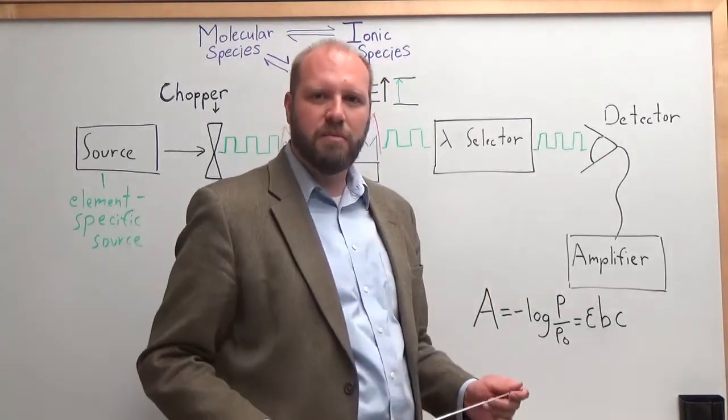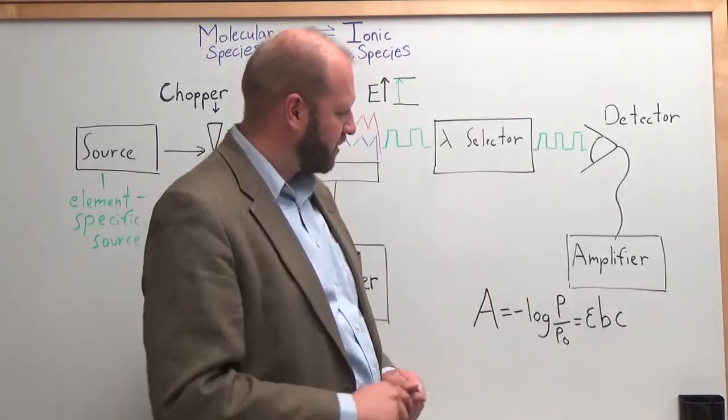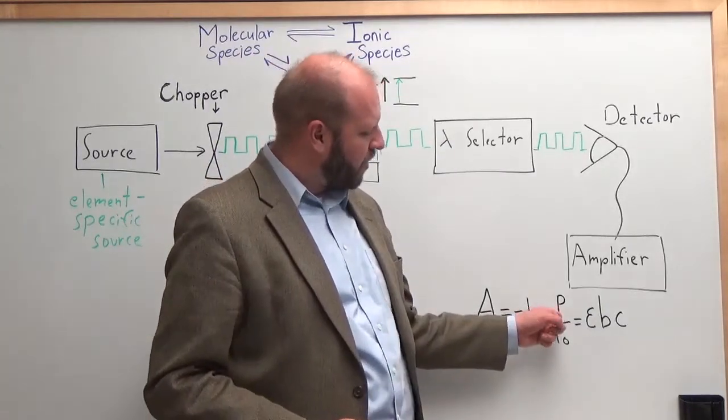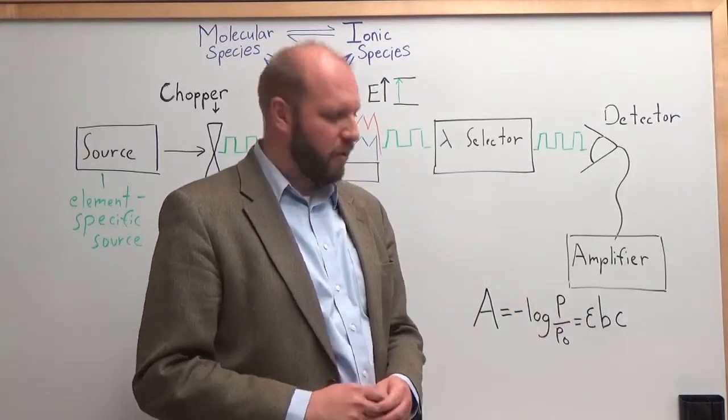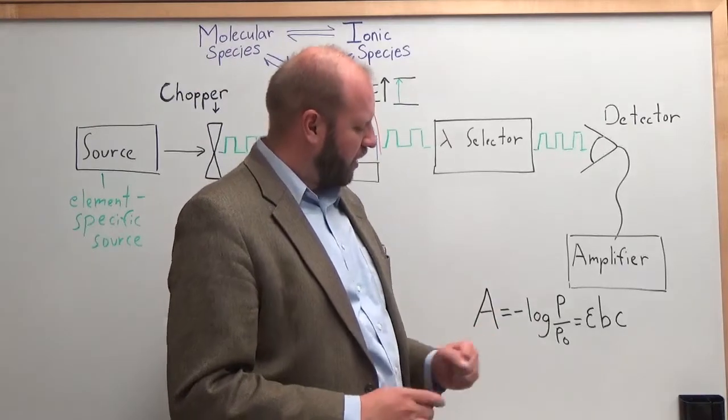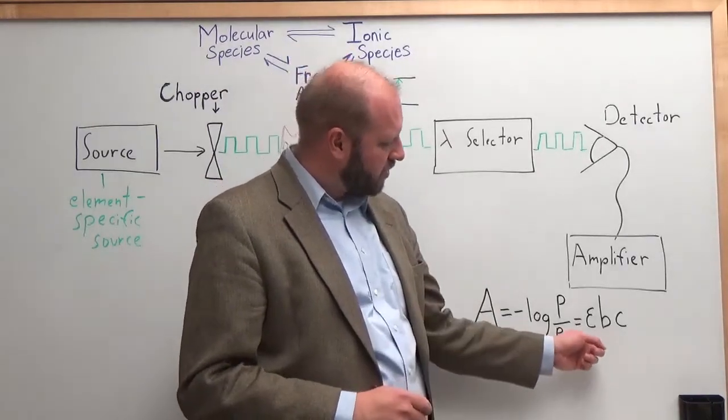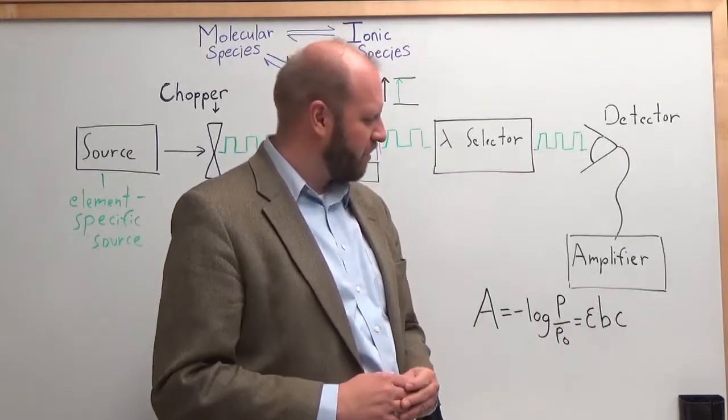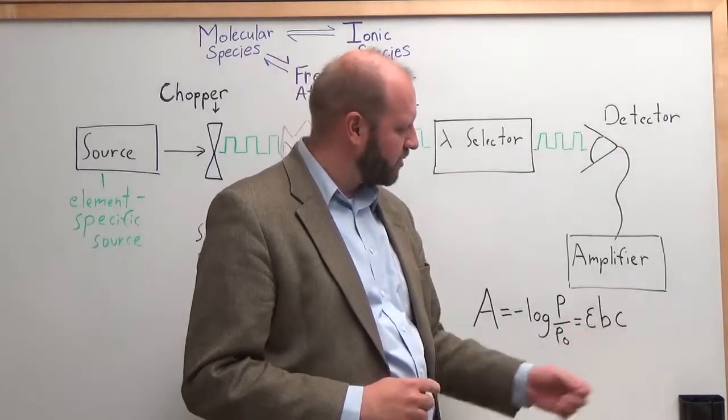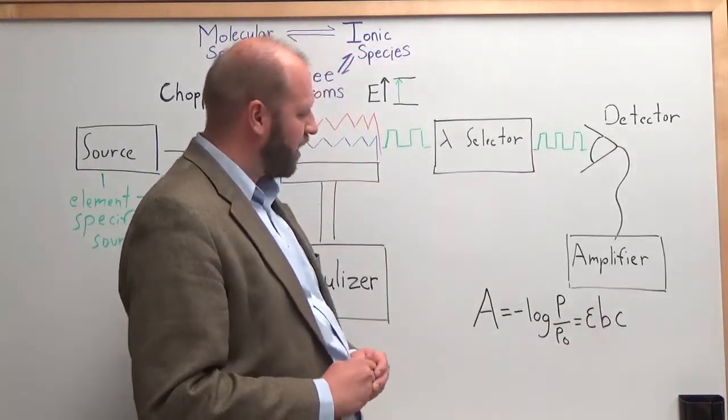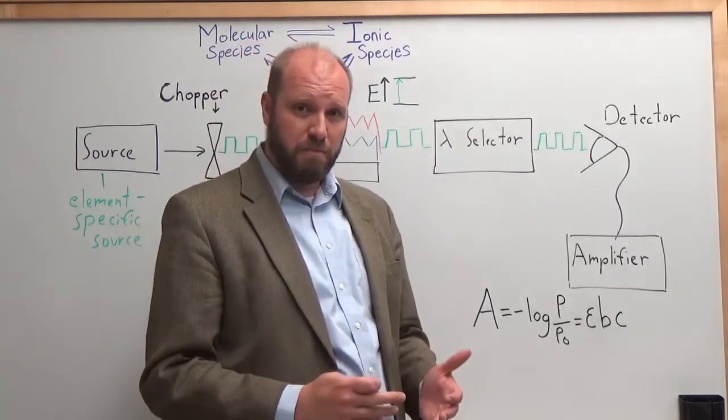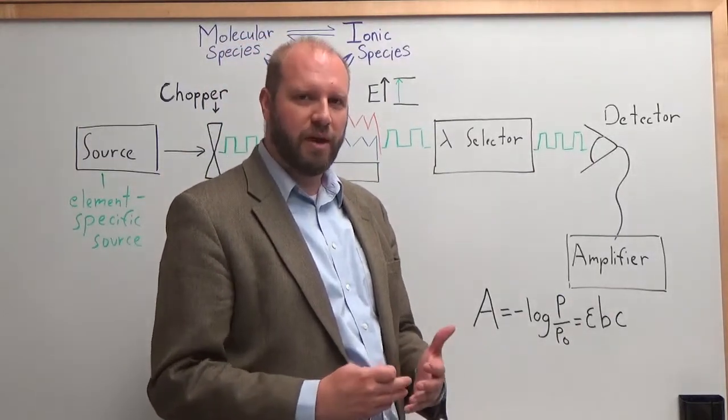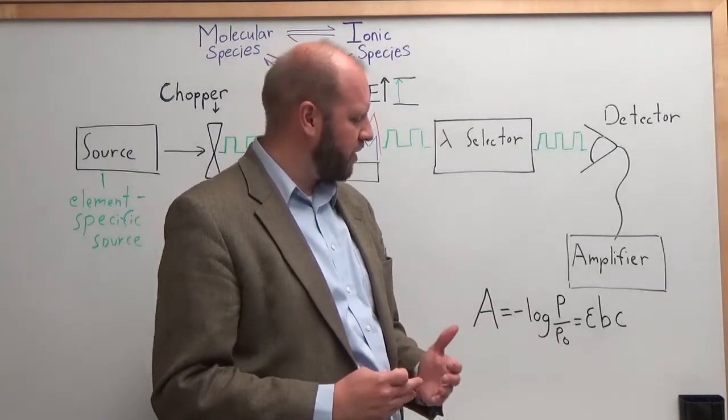And we use Beer's Law to measure the absorbance for this system. We measure the power versus the initial power in for our lamp source to relate to measure the absorbance. And this is equal to epsilon B C where epsilon's molar absorptivity, B is my path length and C is my concentration of my free atoms in the flame. I can make a measurement for an unknown and use a calibration curve I generated from standards to figure out what my unknown concentration was for my element of interest.